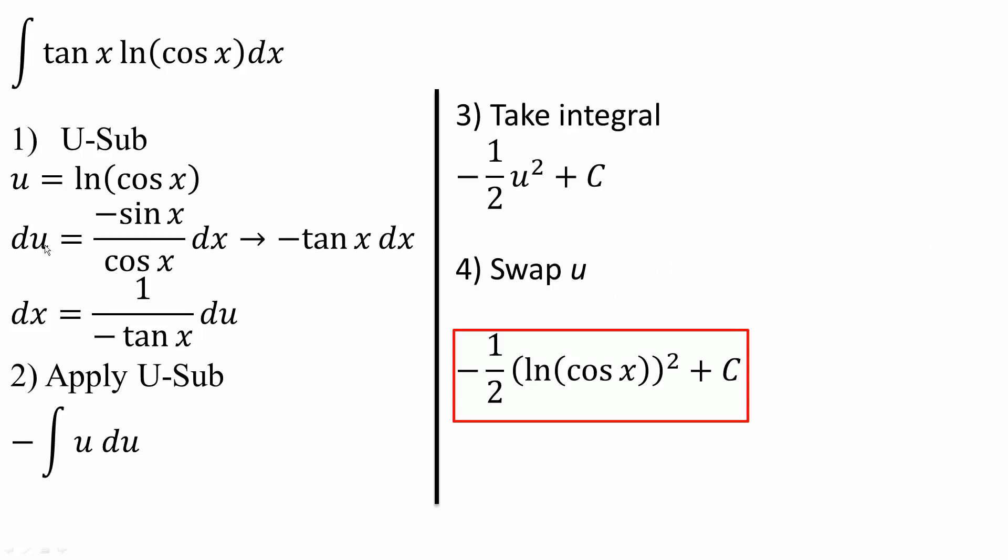By doing this, I would get that du is equal to the derivative of this piece. The derivative of ln would be 1 over cos x, and the derivative of the inside piece, cos x, would be negative sin x. This is a chain rule. So I would get negative sin x divided by cos x dx, which is equal to negative tan x dx.